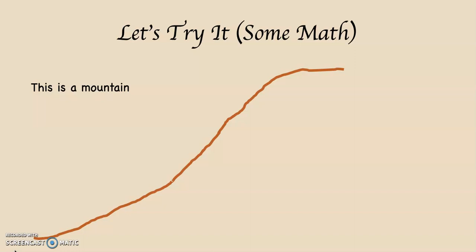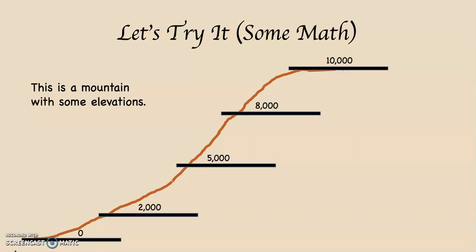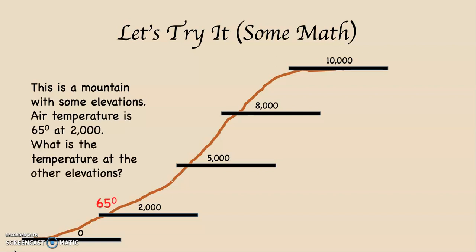Let's try it with some math. This is a diagram of a mountain with elevations marked: 0 (sea level), 2,000 feet, 5,000 feet, 8,000 feet, and 10,000 feet along its slopes. We'll assume the given is 65 degrees — meaning at 2,000 feet, the air temperature is 65 degrees. We're going to figure out the temperature at 5,000 feet, 8,000 feet, 10,000 feet, and sea level using the normal lapse rate.